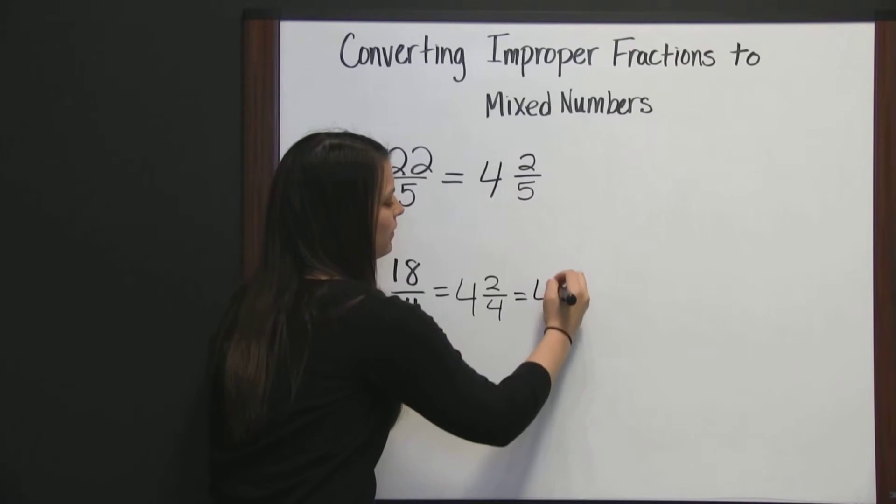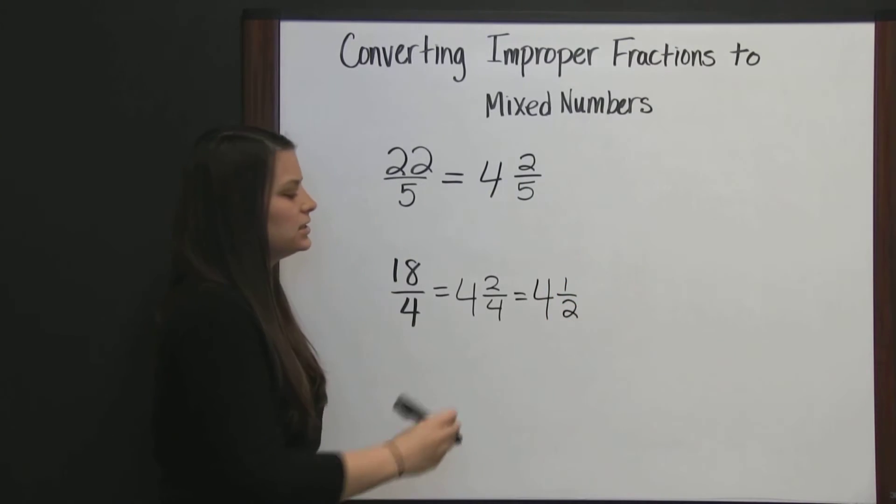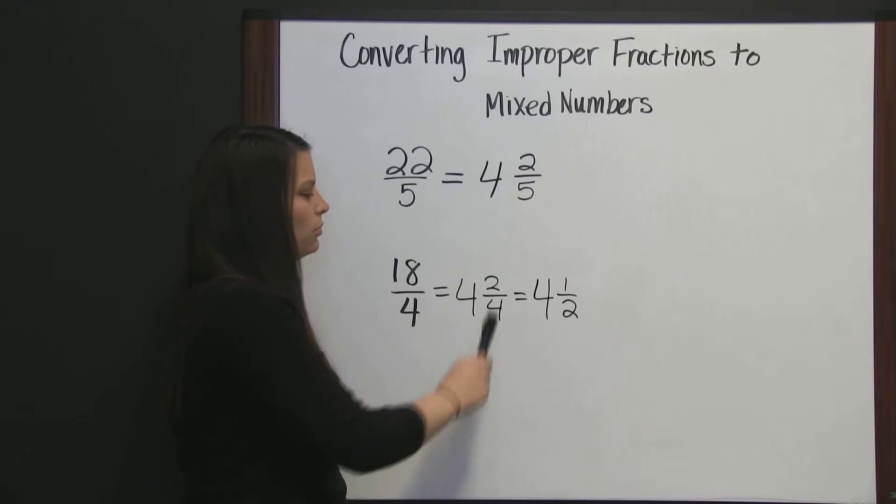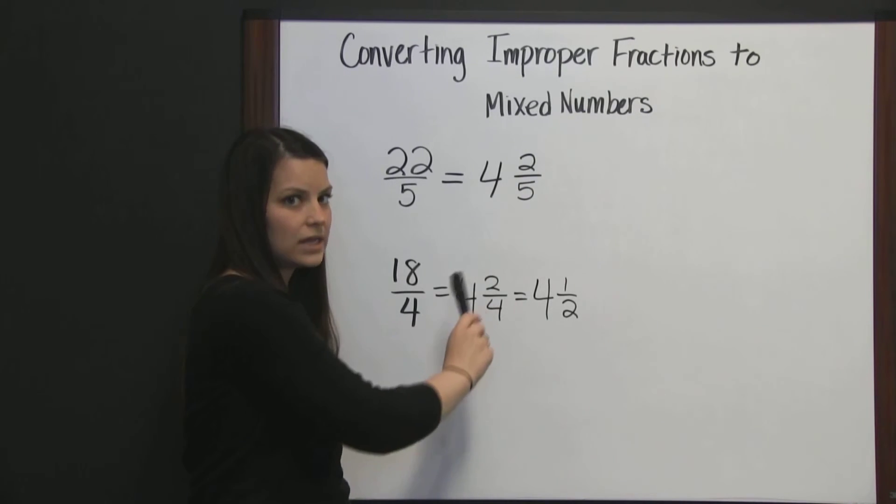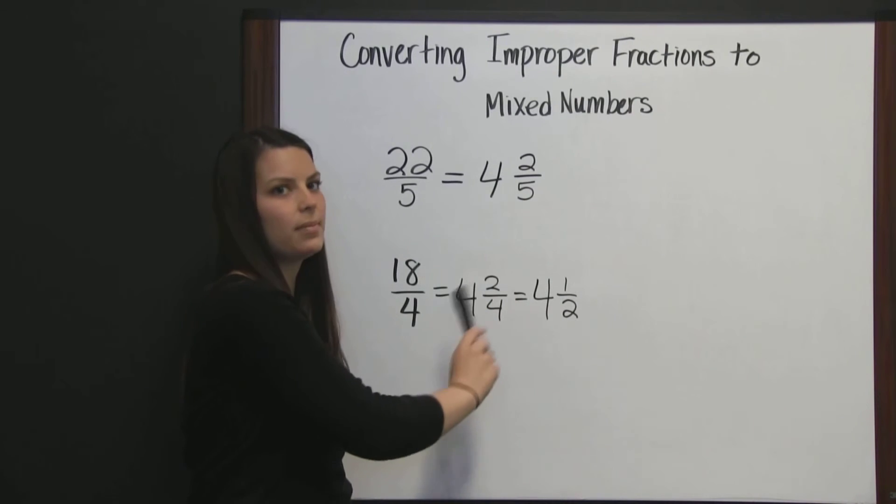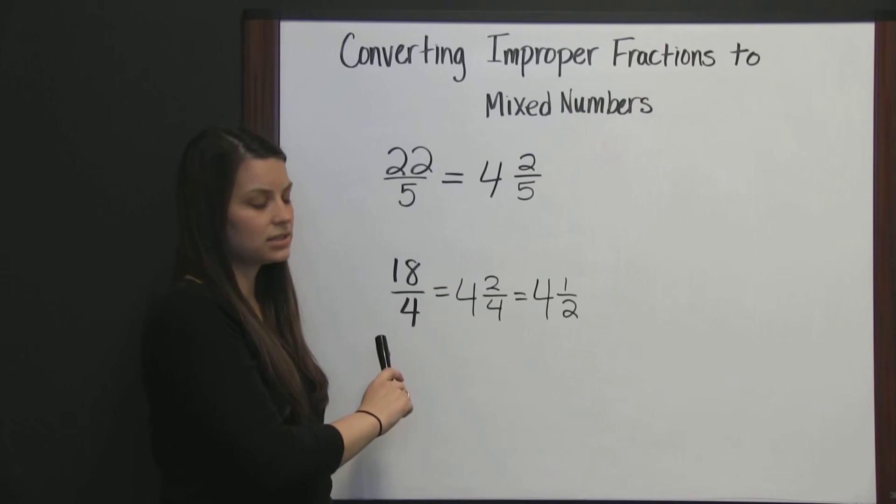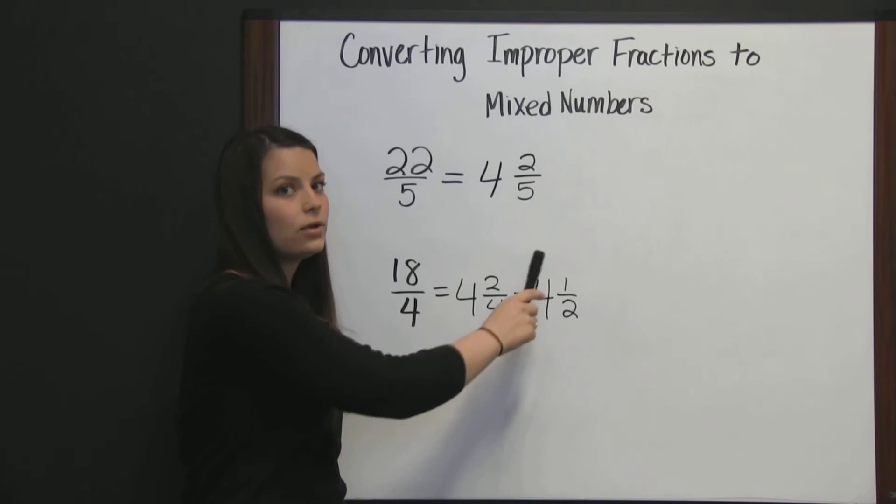So, four and two-fourths simplify to be four and one-half. Since the GCF of two and four is two, we divide both numerator and denominator by two. Two by two is one, and four divided by two is two. So, eighteen-fourths as a mixed number is four and one-half.